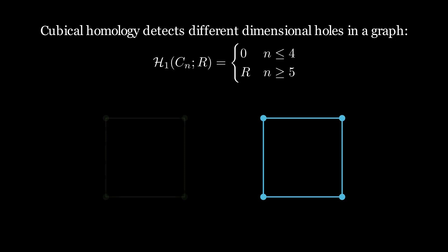So discrete cubical homology kind of sees these four and smaller cycles as kind of two small holes and doesn't detect them. But for anything greater than or equal to 5, this is a sufficiently large enough hole in our graph that discrete cubical homology will actually detect this in the first homology group.